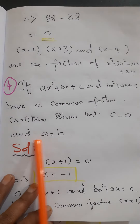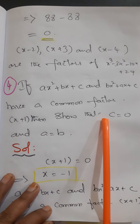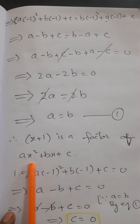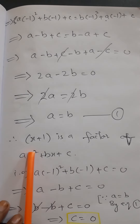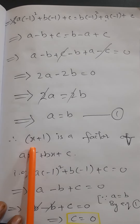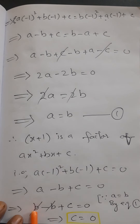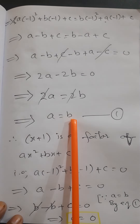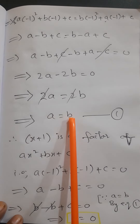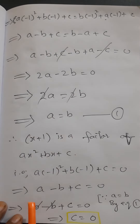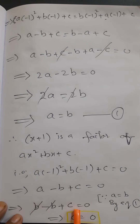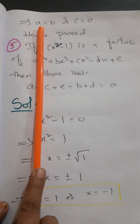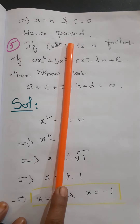We have shown a = b. Now we show c = 0. Since x + 1 is a factor of ax² + bx + c, substituting x = -1 gives a - b + c = 0. Since a = b, we replace b with a: a - a + c = 0, so c = 0. Hence we have proved a = b and c = 0.